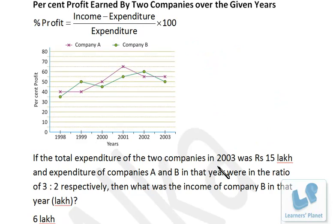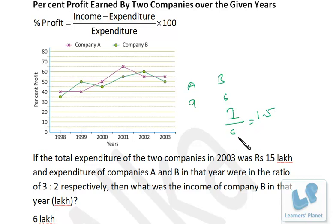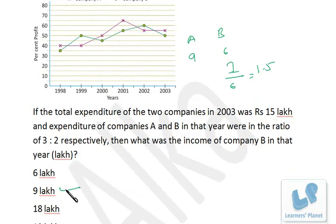Next question: total expenditure of two companies in 2003 was 15 lakh, with expenditure ratio of A to B being 3:2. What was income of company B? Expenditure of B = (2/5) × 15 = 6 lakh. Profit percent of company B in 2003 is 50%, so income/expenditure = 1.5. Therefore, income of B = 1.5 × 6 = 9 lakh.